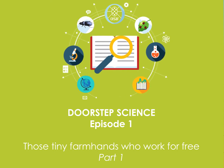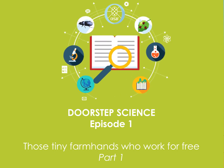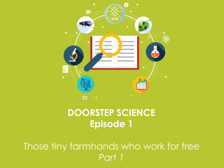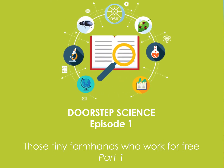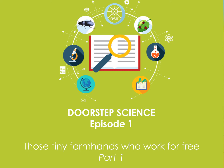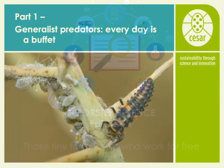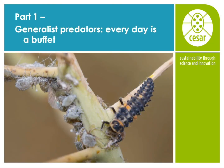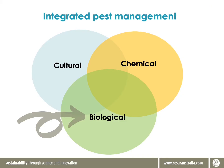Hi everyone, this is Doorstep Science, series one, and we're talking natural enemies — those tiny farmhands who work for free. Today we're looking at integrated pest management with a focus on biological control of crop pests, particularly generalist predators.